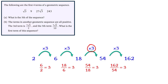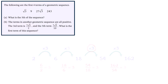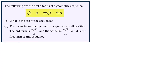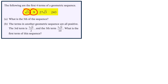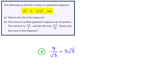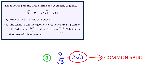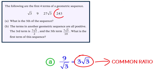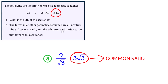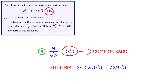Let's apply this reasoning to the sequence in this question. We need to divide one of the terms by the previous term, so let's pick the second and the first term: 9 divided by root 3, which is equal to 3 root 3. So 3 root 3 is the common ratio. Now that we know the common ratio, we can multiply the fourth term, 243, by 3 root 3 in order to find the fifth term. So 243 multiplied by 3 root 3 equals 729 root 3.